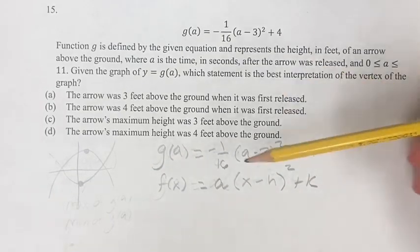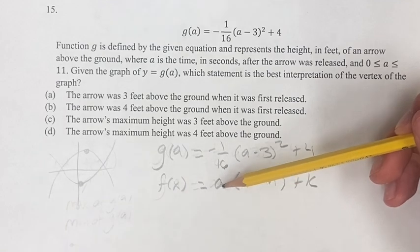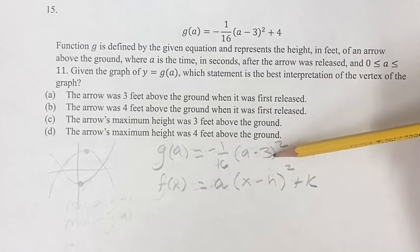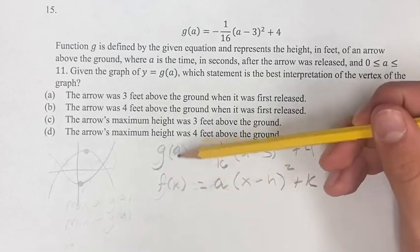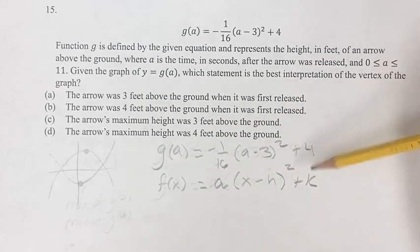So negative 1/16th represents the constant out in front. Then we have a minus 3, x minus h, right? So a and x are the variables in this situation, squared, plus k.